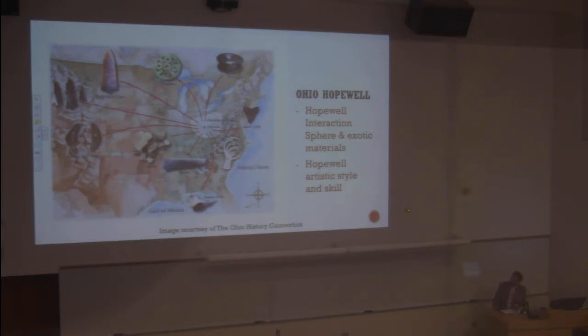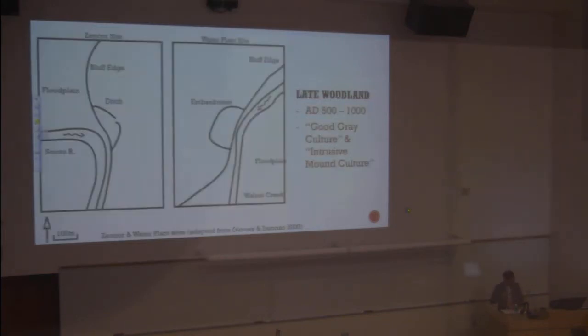Around A.D. 400 to 500, Hopewell ends. There's no more exotic materials coming into the region. The massive earthwork construction ends. This form of symbolism drops out of the record. This marks the beginning of the late woodland period in Ohio, which went from about AD 500 to 1000.